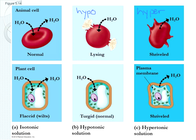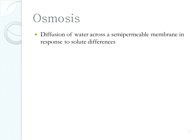In a hypotonic solution — hypo means less solute outside the cell — there's more water outside the cell. This is your weak Kool-Aid with lots of extra water. Water moves down its concentration gradient into the cell, and the cell will swell up and burst. But in an isotonic solution, where the inside and the outside are balanced, the cell can maintain a normal configuration.